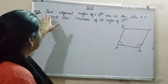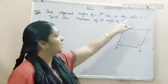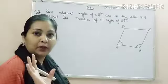In problem 5, it is given that two adjacent angles of a parallelogram are in the ratio of 4 to 5, and you have to find the measure of all the angles of the parallelogram.